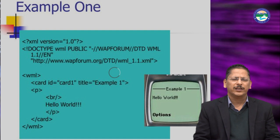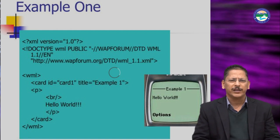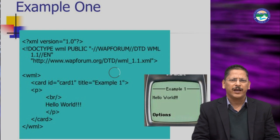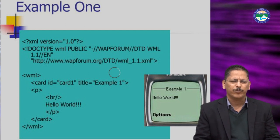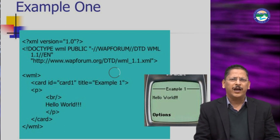This is a simple WML program, very similar to HTML. In HTML we use the same tags — P tag for paragraph, BR tag for line break, and the message text. Closing tags are slash P for paragraph, slash card for card, and slash WML for the program. This way we can design a page for the mobile phone.